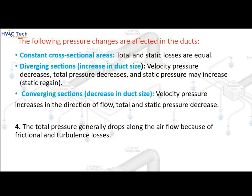The following pressure changes occur in ducts: in constant cross-sectional areas, total and static losses are equal. In diverging sections — an increase in duct size — velocity pressure decreases, total pressure decreases, and static pressure may increase (static regain). In converging sections — a decrease in duct size — velocity pressure increases, while both total and static pressure decrease. Total pressure generally drops along the airflow due to frictional and turbulence losses.